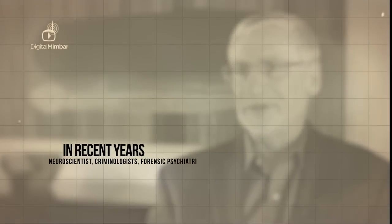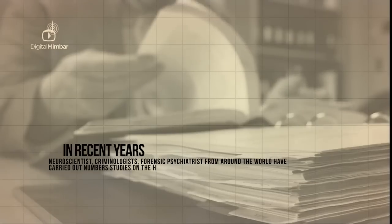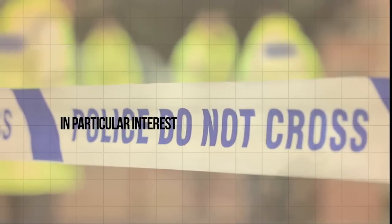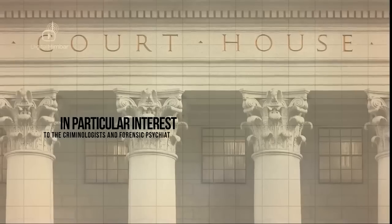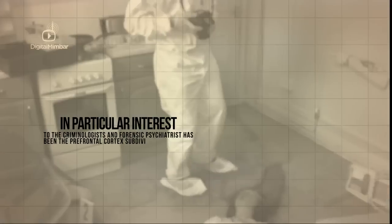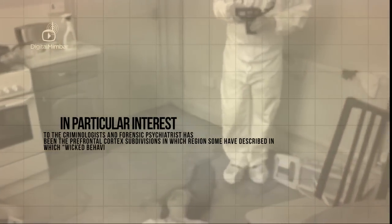In recent years, neuroscientists, criminologists, and forensic psychiatrists from around the world have carried out a number of studies on the human brain. In particular, of interest to criminologists and forensic psychiatrists has been the prefrontal cortex subdivisions, in which regions some have described where wicked behavior takes place. The frontal cortex is an area of the brain which plays much of the final decision-making when doing crimes such as murders, serial killers, rapists, and robbers.